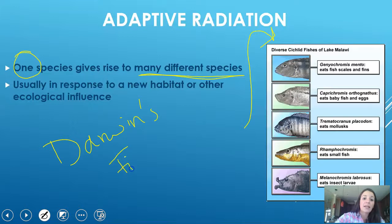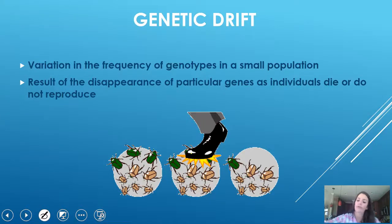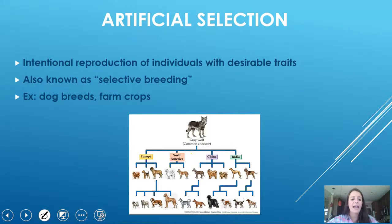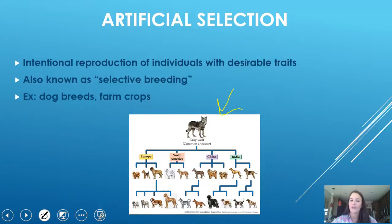Darwin's finches show adaptive radiation — a more intense version of divergent evolution where one species gives rise to many. The most commonly referenced examples are the cichlid fishes in Africa and Darwin's finches. Genetic drift is where genotypes vary within a small population and genes shift as individuals die. Finally, artificial selection is the intentional reproduction of individuals with desirable traits — for example, the wolf is the common ancestor of all domestic dog breeds, selectively bred over time. This is also evident in farm crops. That's it for your notes.